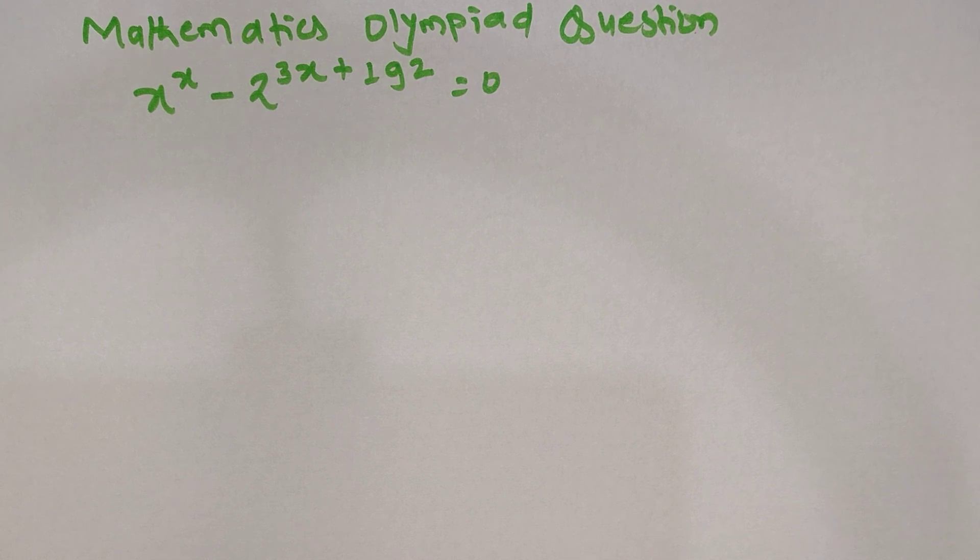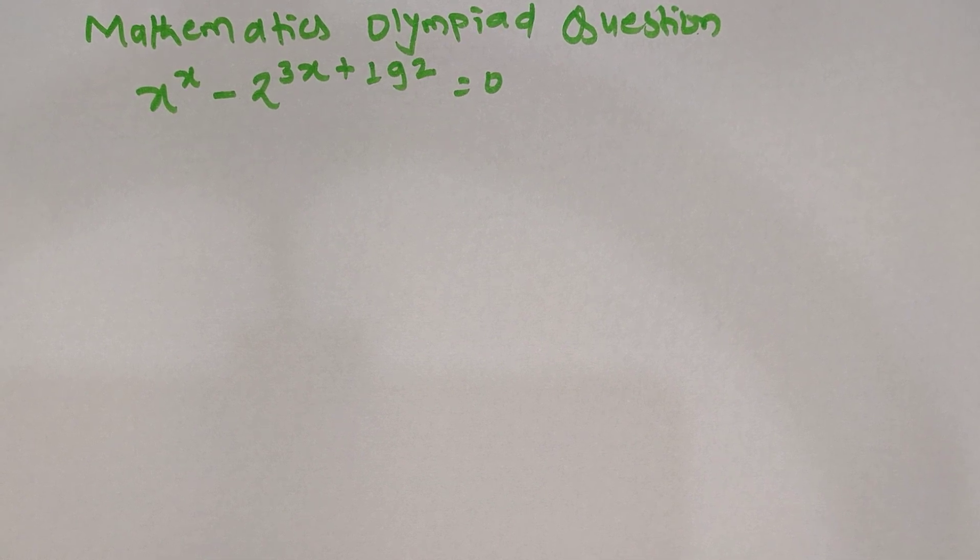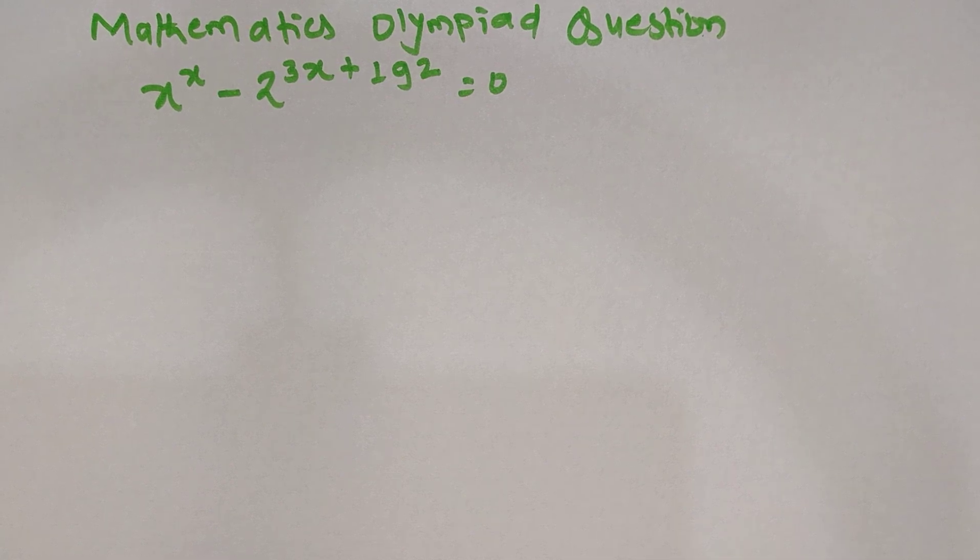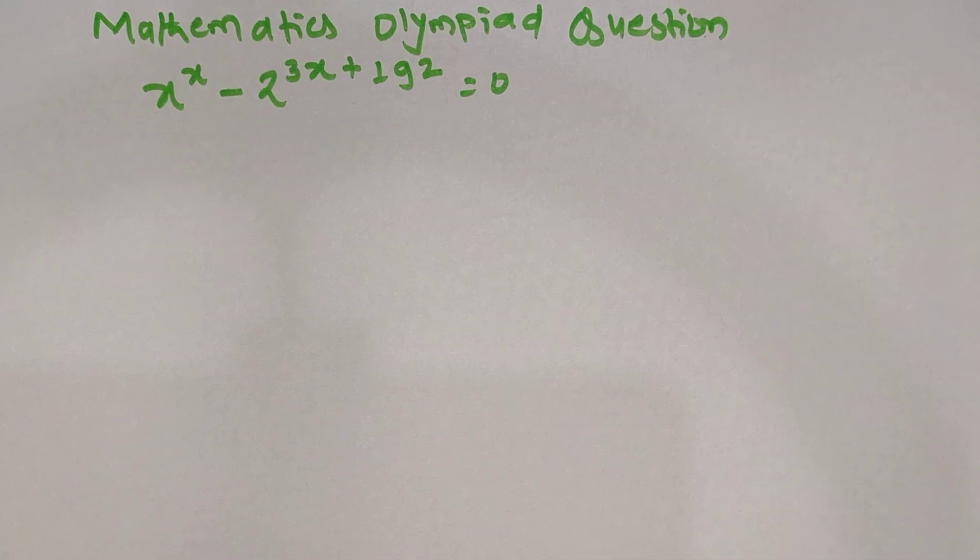Hello everyone, welcome to the new video. Today I have a new question for you: x power x minus 2 power 3 times x plus 192 equals 0, and we have to find the value of x from this given equation. This question is asked in the mathematics Olympiad, so let's get into the question and find the solution.